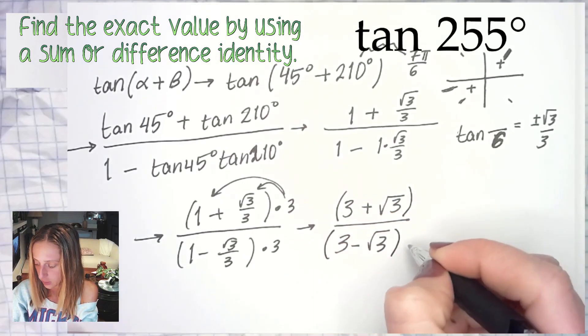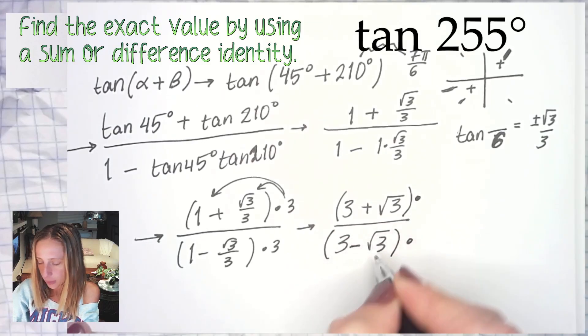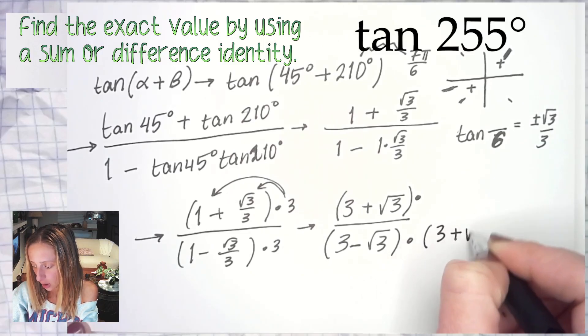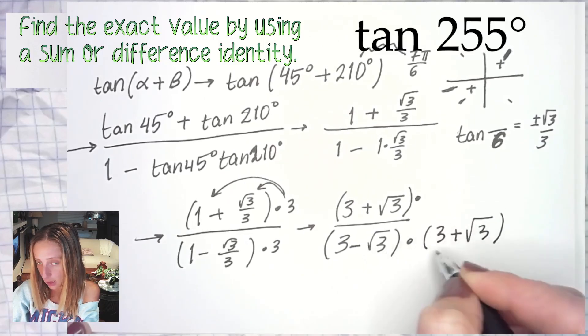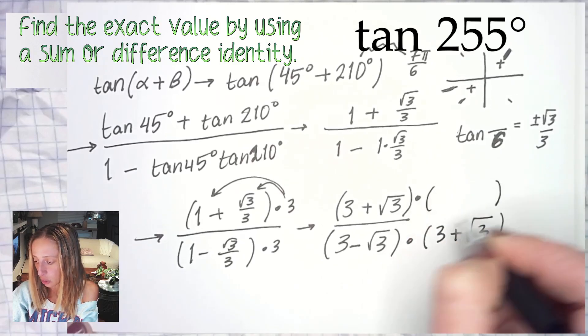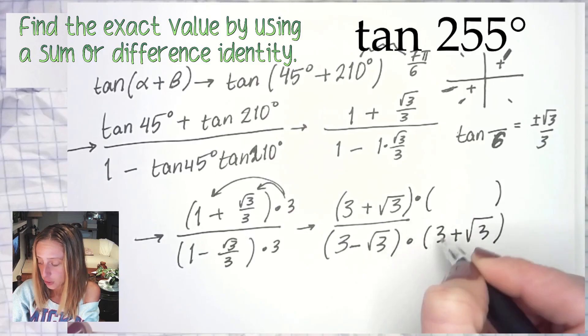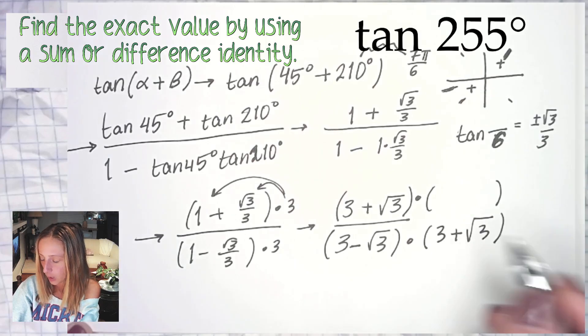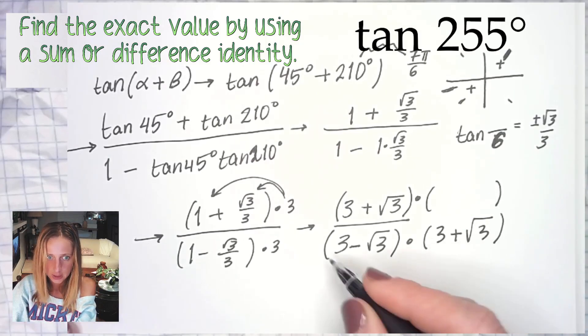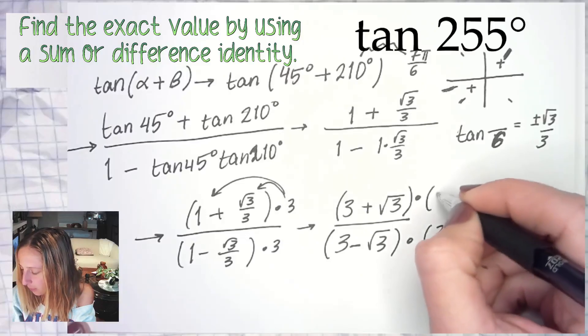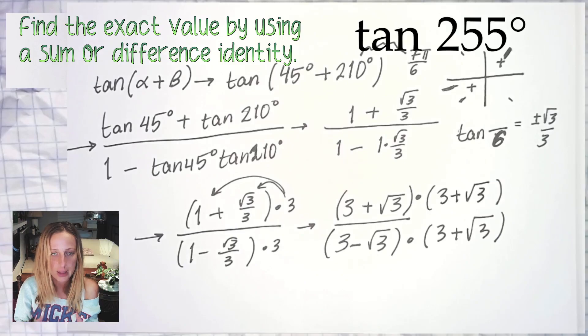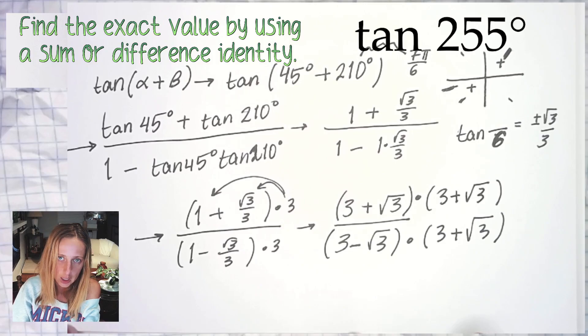When your denominator is a binomial with a radical in it, you want to multiply by what we call the conjugate. The conjugate is the same expression that you have in your denominator except you're going to change the sign in the middle. So when you conjugate your verbs in your final language class, you keep the beginning and you change the ending. As a noun, a conjugate: keep the beginning and change the ending. But whatever you do to the bottom you must do on top.